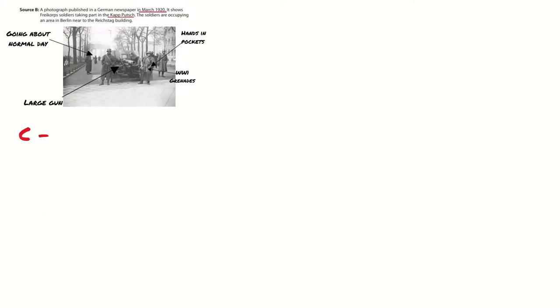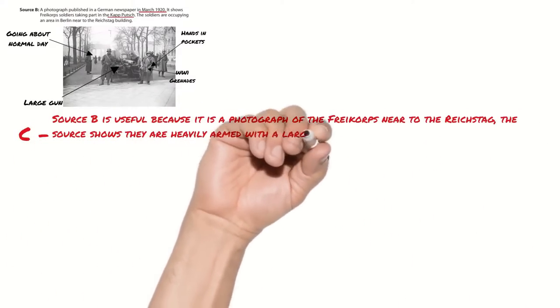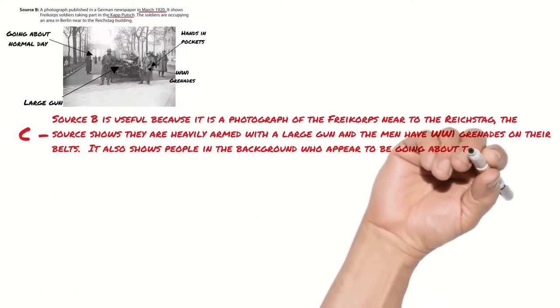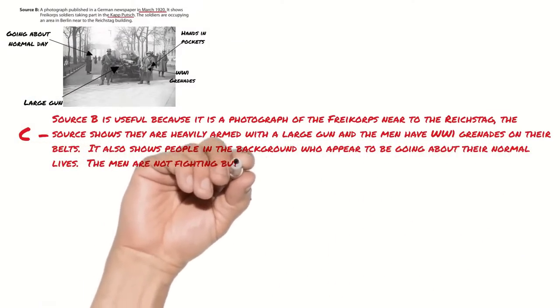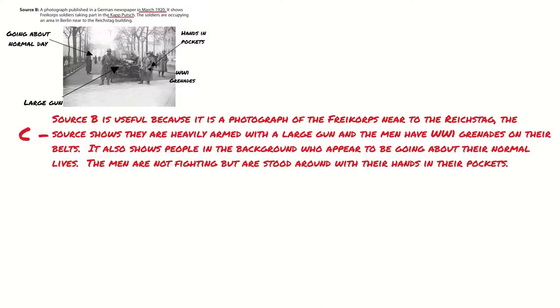So now I've annotated my source I can begin my first answer. For the content section I'm just drawing the examiner's attention to the parts of the source I'm going to analyse. So I've written, Source B is useful because it is a photograph of the free corps near to the Reichstag. The source shows they are heavily armed with a large gun and the men have WW1 grenades on their belts. It also shows people in the background who appear to be going about their normal lives. The men are not fighting but are stood around with their hands in their pockets. So there's nothing difficult here.